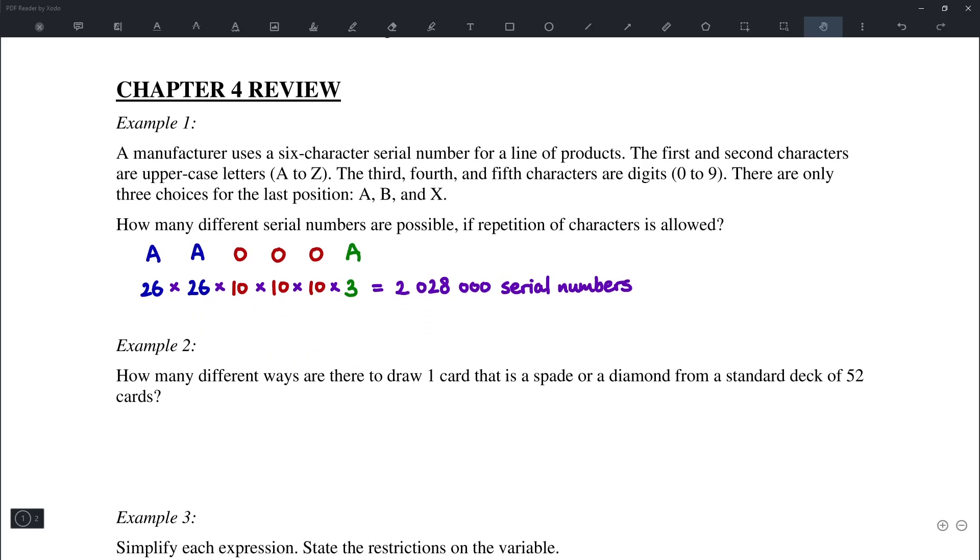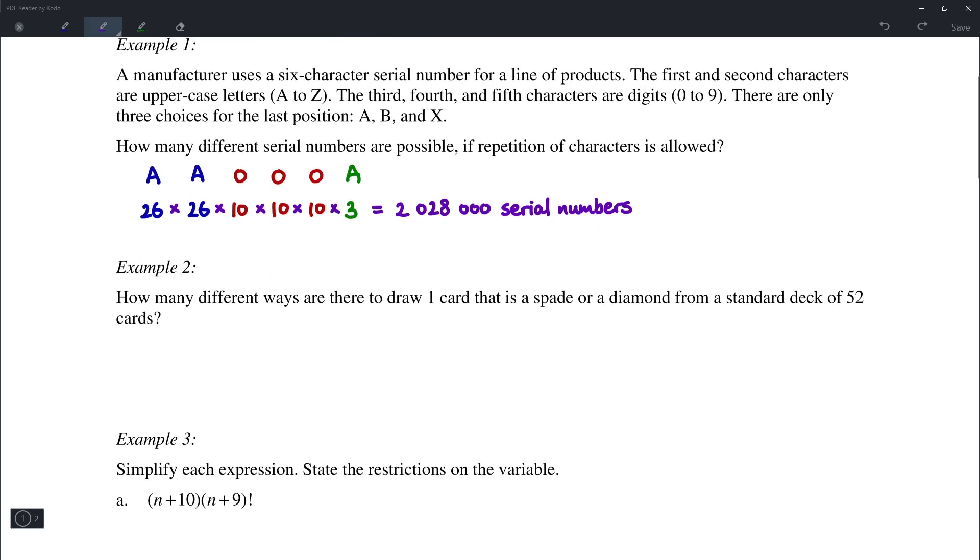Example number 2. So we are to draw a single card that is either a spade or a diamond from a standard deck of 52 cards. We know that there are 13 spades and there are 13 diamonds. So there are simply 26 possibilities.